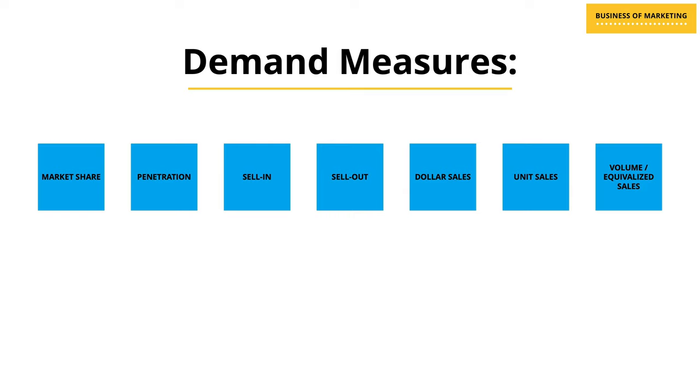Before I conclude, I wanted to quickly remind you about some measures I've already discussed related to price and demand. You need a combination of these measures to calculate price elasticity of demand. There are lots of ways to get a sense of demand, but I'm talking about hard measures marketers use to determine whether demand is moving up or down. Some of these demand measures are: market share, penetration, sell-in, sell-out, dollar sales, unit sales, volume, or equivalized sales. I have previous videos on these and will drop the links so you can refer to them.